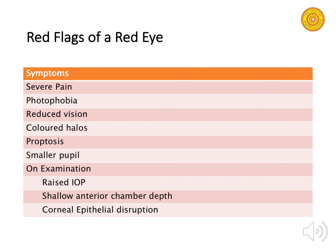Red flags for red eye that warrant ophthalmologist referral: severe pain, photophobia, reduced vision, colored halos, proptosis, a smaller pupil. On examination: increased intraocular pressure, shallow anterior chamber depth, and corneal epithelium disruption. These features should alert you to refer.